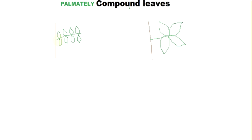Now let's talk about palmately compound leaves. In pinnately compound leaves, the leaflets arise at different positions along the midrib — first pair here, then here, then here. But in palmately compound leaves, all the leaflets arise from a single point. This also arises due to the deepening of incisions present in a simple entire-type leaf.